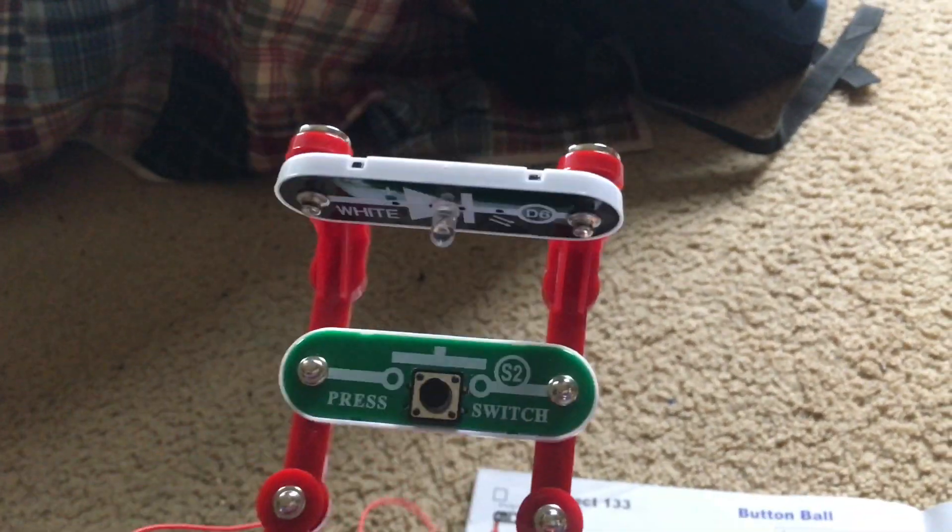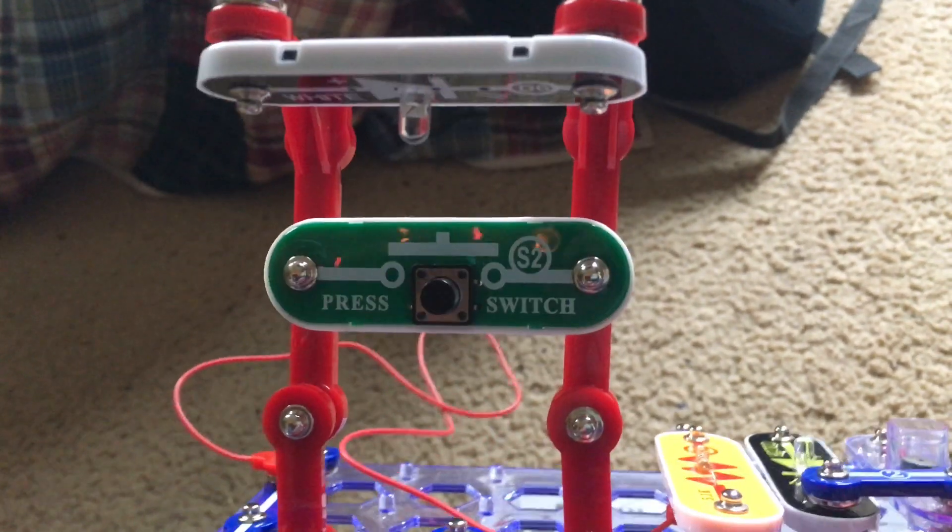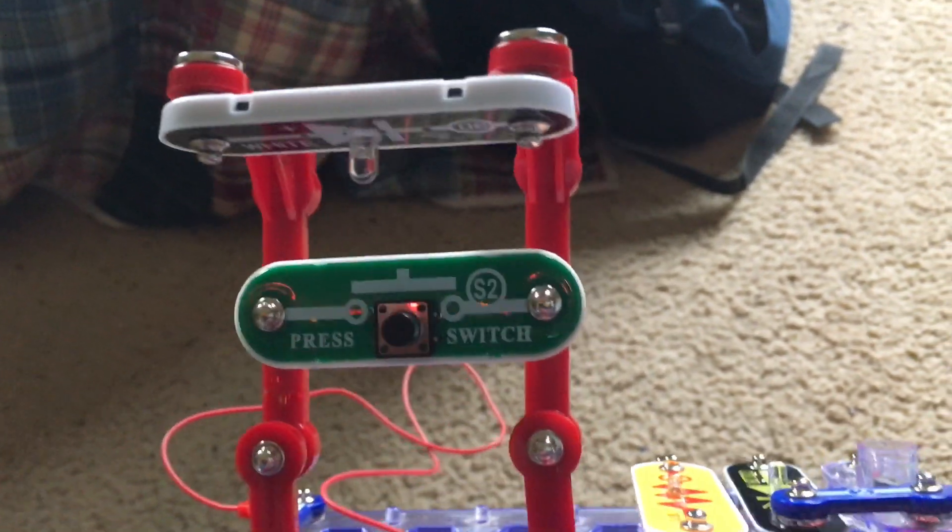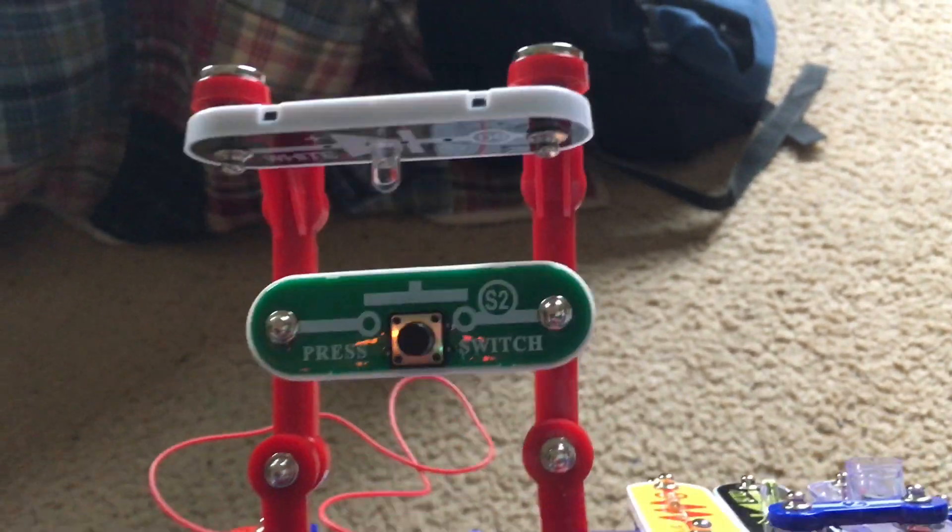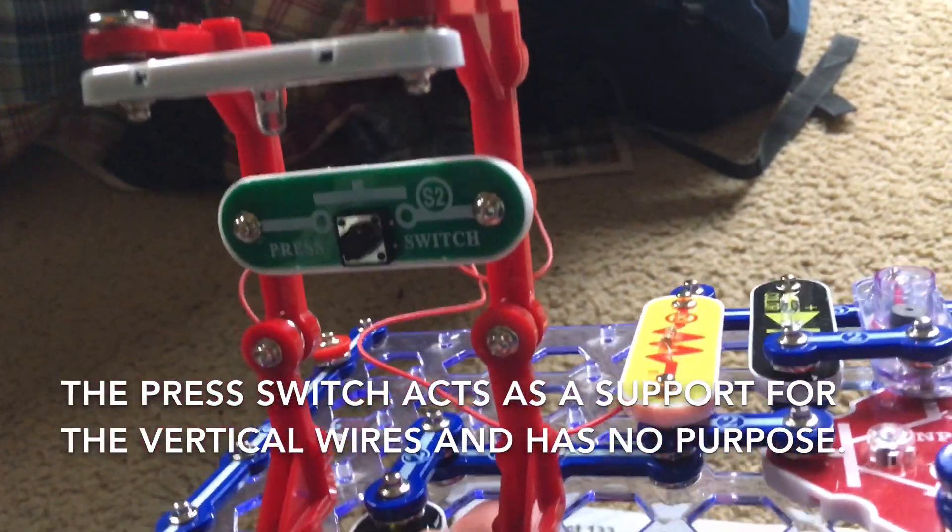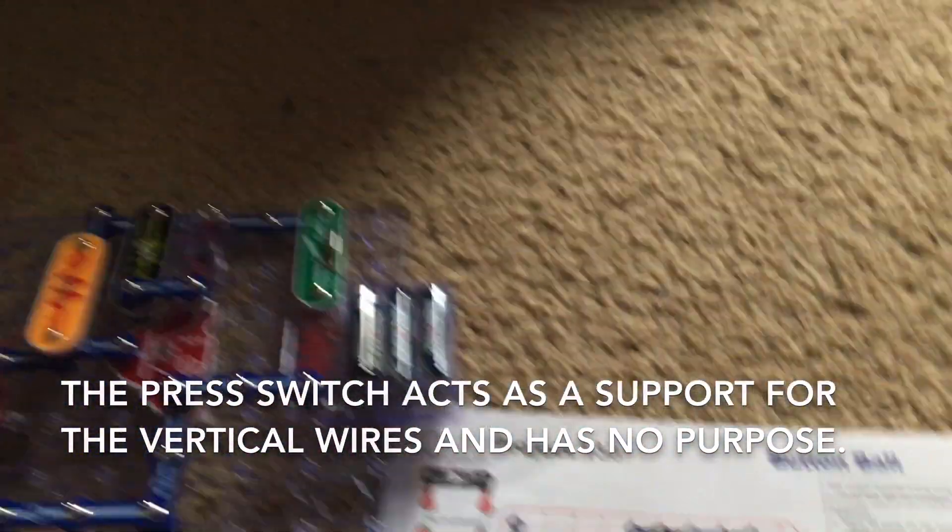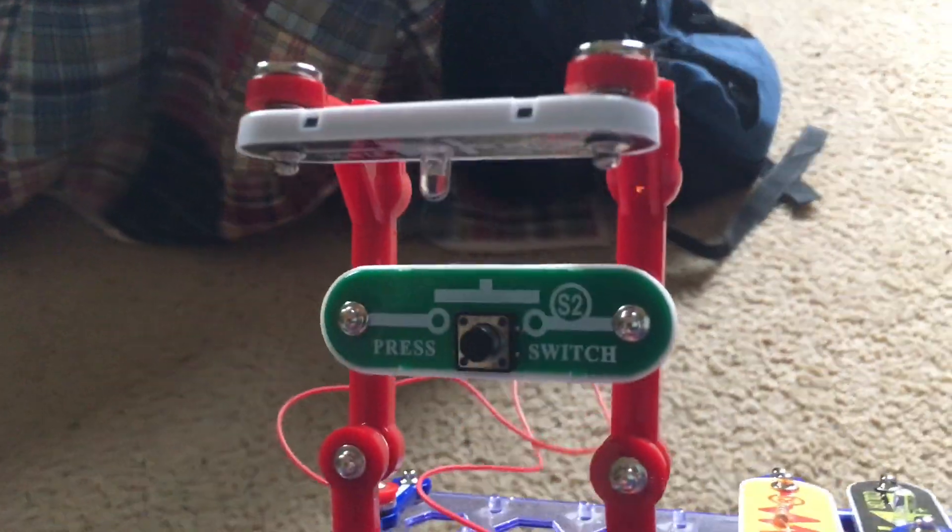You'll see that this circuit includes the white LED mounted in an overhead position in an inverted position and the press switch. Note that the press switch does not actually do anything, it's just to support the vertical snap wires that hold the white LED up.